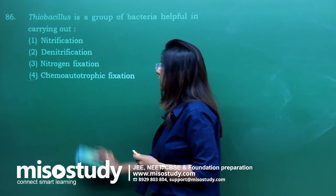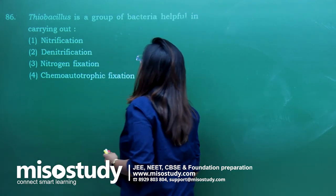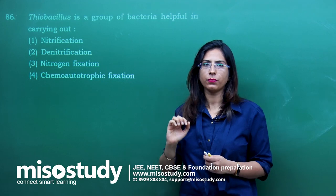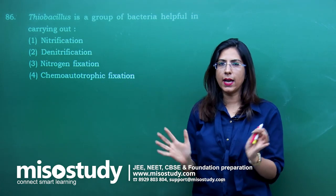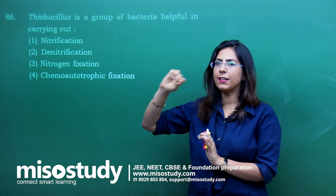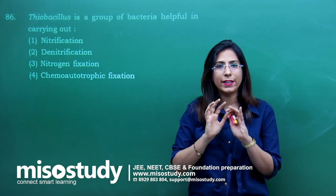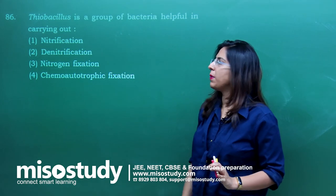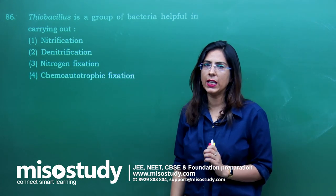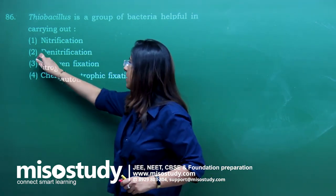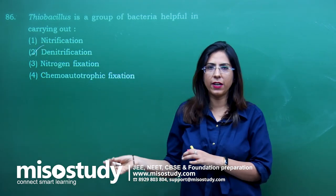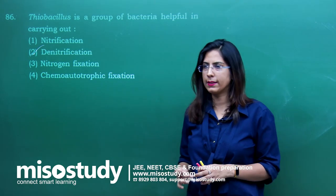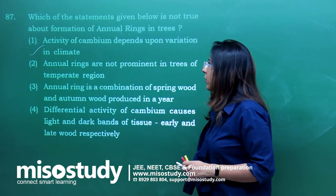Question number 86 — Thiobacillus is a group of bacteria helpful in carrying out which process? Referring to the nitrogen cycle, Thiobacillus is clearly mentioned in NCERT — another direct question. Thiobacillus helps in the process of denitrification. The correct answer is option 2.